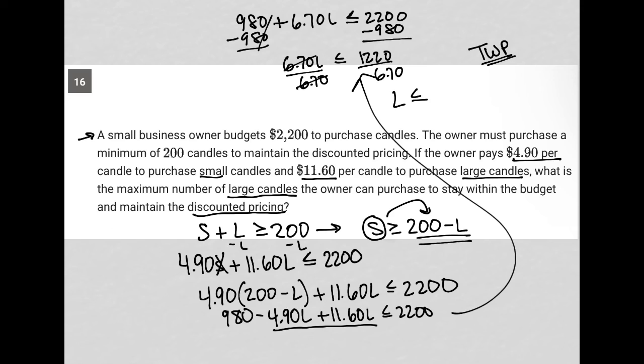And L is less than or equal to 182.1, let's call it. So again, the question is what is the maximum number? Well, if L, the number of large candles has to be less than or equal to 182.1, that means the maximum number we can have is 182. So that's our correct answer here. 182 candles is the largest number of large candles that we can purchase.